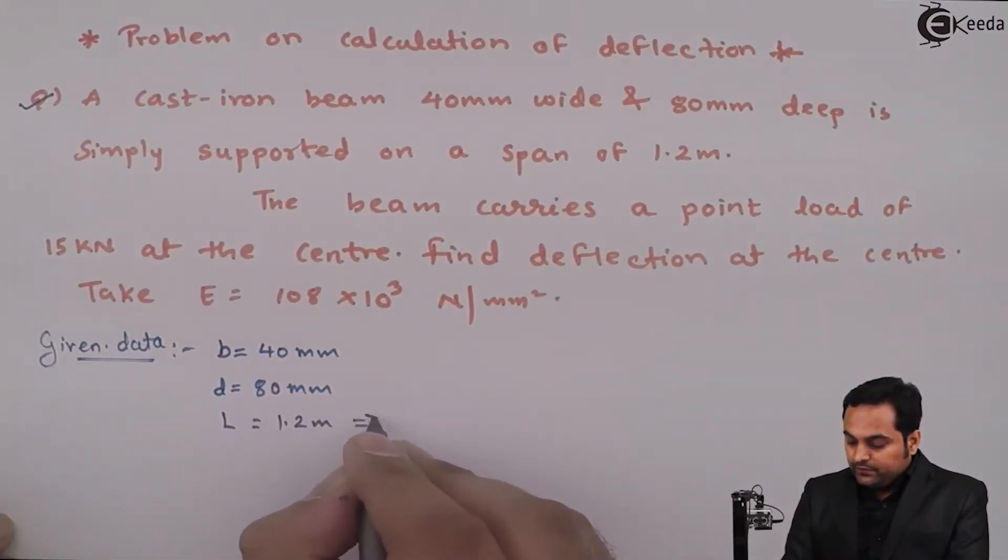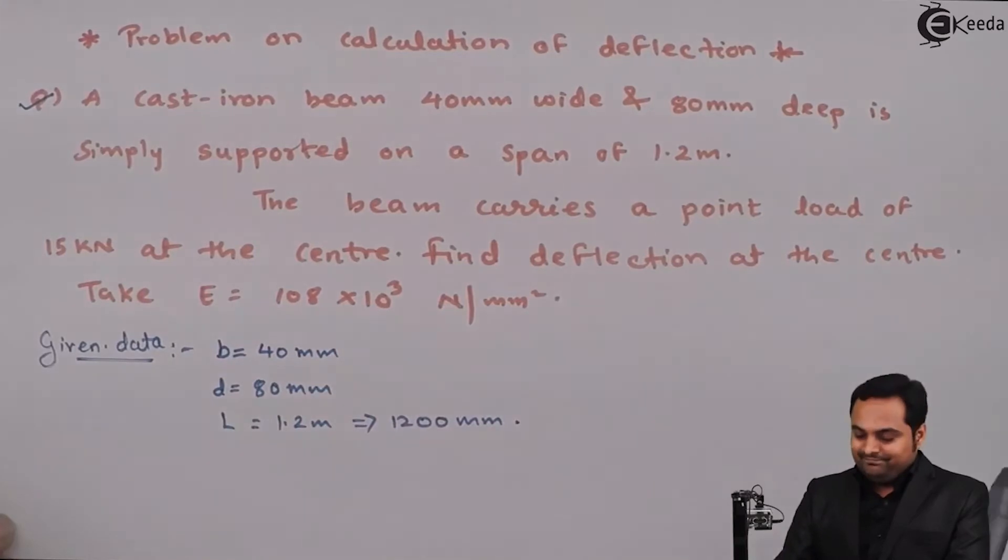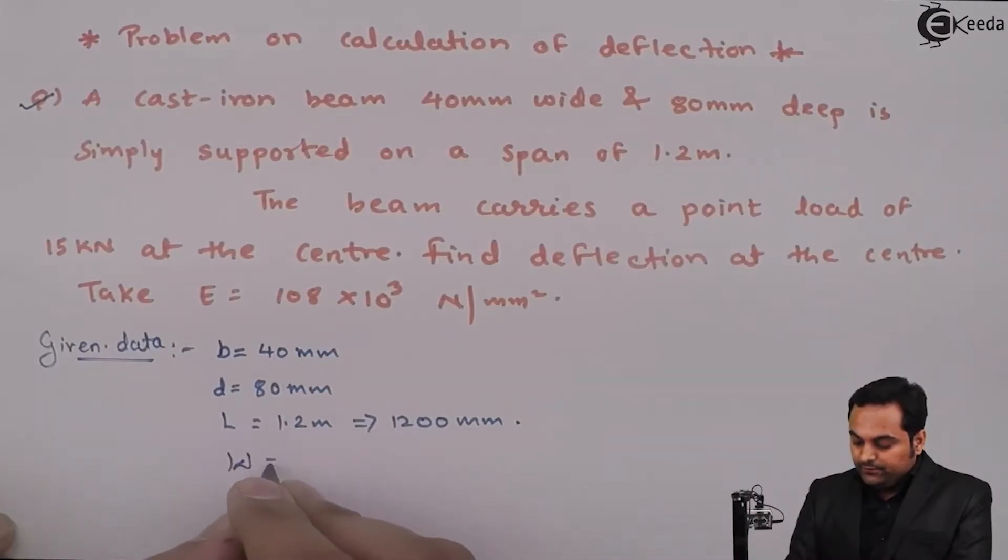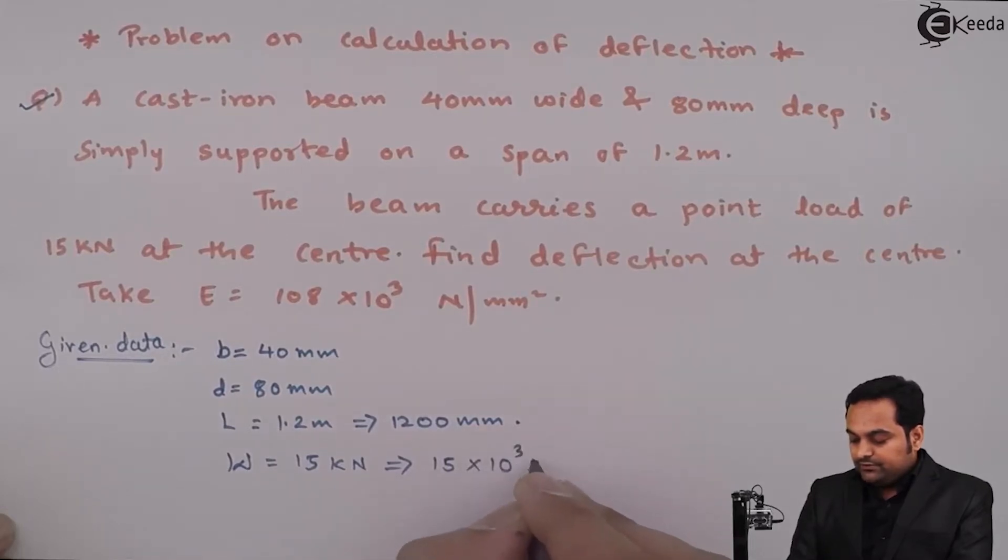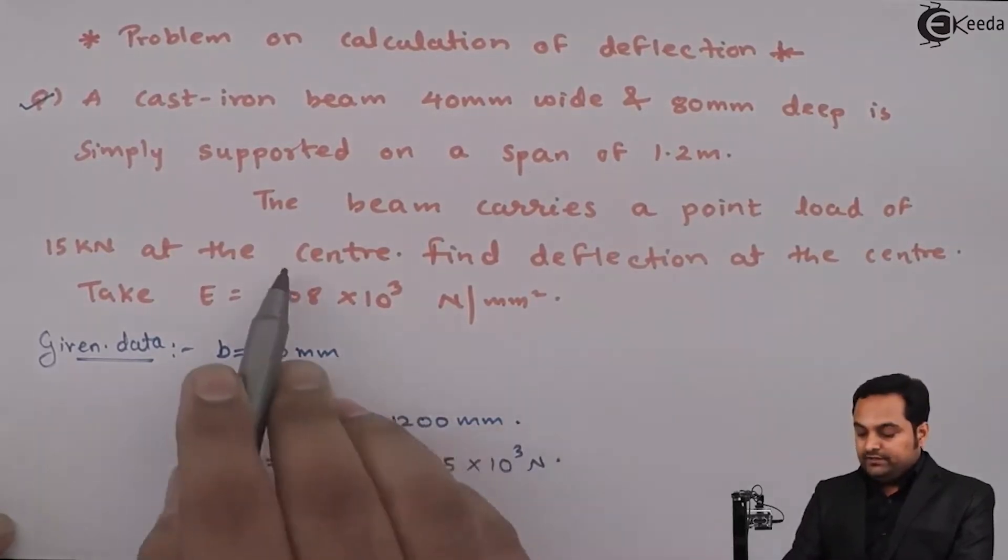So it is 1200mm. The beam carries a point load of 15 kilonewton. So, I will write down W as 15 kilonewton, so 15 into 10 raise to 3 Newton.